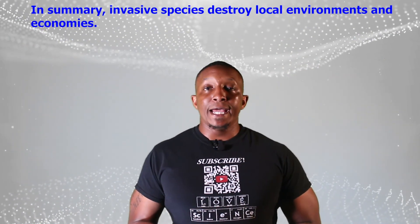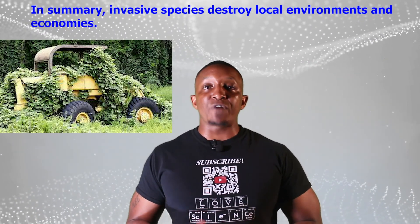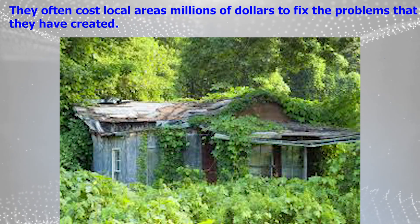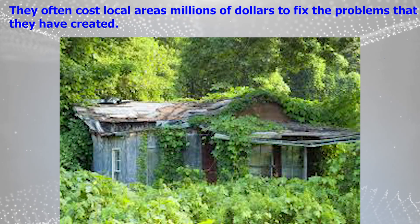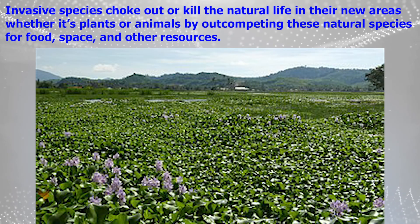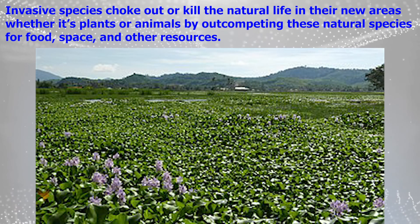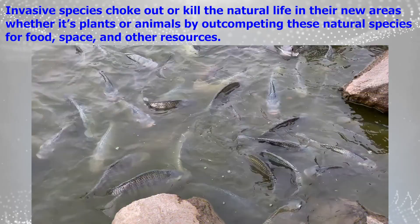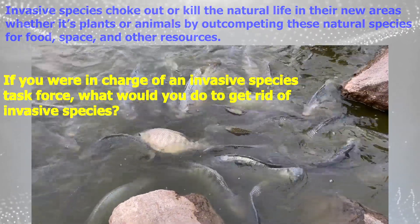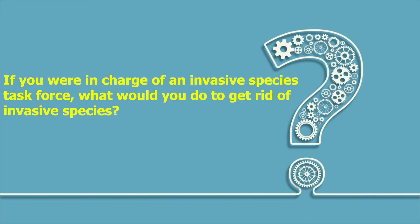In summary, invasive species destroy local environments and economies. They often cost local areas millions of dollars to fix the problems they have created. Invasive species choke out or kill the natural life in their new areas — whether plants or animals — by outcompeting these natural species for food, space, and other resources. If you were in charge of an invasive species task force, what would you do to get rid of invasive species?